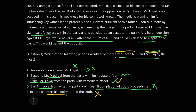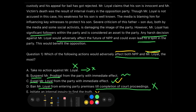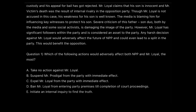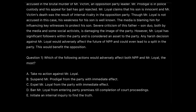Therefore we go back to Option C and confirm it as our answer, because it directly affects Mr. Loyal and at the same time directly affects the party's future. With this we come to the end of this video. We learned that not always does the most logical answer get us to the correct answer — sometimes questions are tilted, just like this one, where it asked which action would adversely affect both the party and the person at the same time.